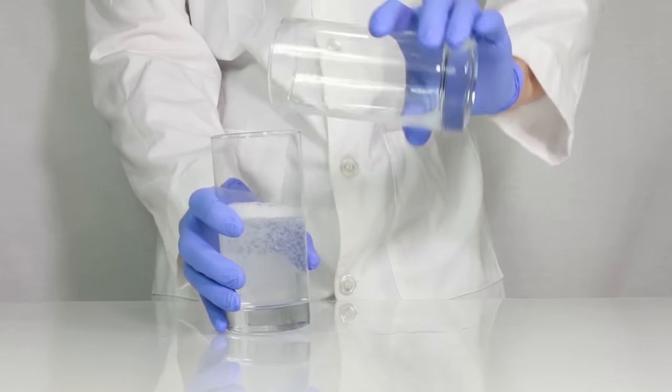Bearded Science Guy here and today I'm going to show you how to make an iodine clock reaction. To start with, pour 128 milliliters of warm distilled water into a container.